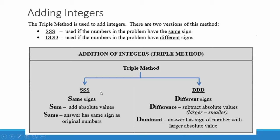If the signs are the same you're going to use the left hand side of this chart. The signs are the same, you will sum the absolute values and then you use the same sign as the two numbers that you're adding.